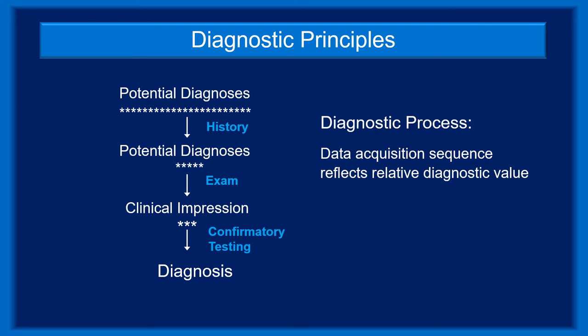Before we talk about the nuts and bolts of serology, it is important to consider how clinicians arrive at any diagnosis. The diagnostic process begins the moment a clinician hears a patient's chief concern. While the initial list of potential diagnoses might be quite long, a thorough history will eliminate most possibilities, and a careful examination will whittle the differential diagnosis list down even more. At this point, the clinician is often able to construct a clinical impression, which and the final diagnosis are often one and the same.